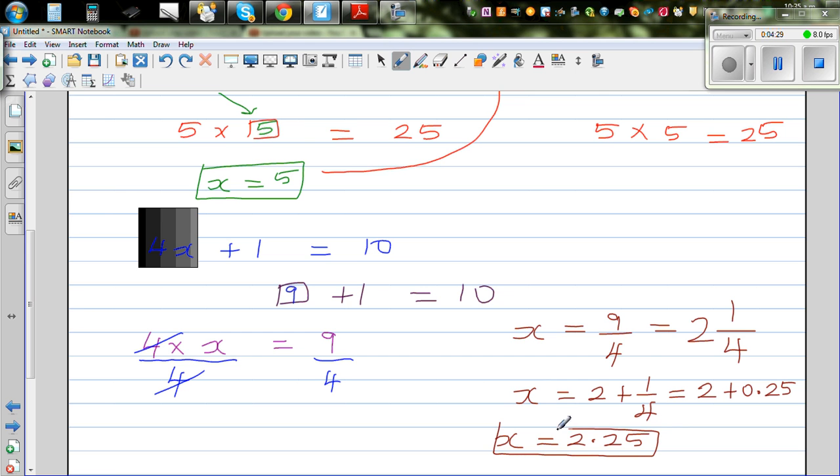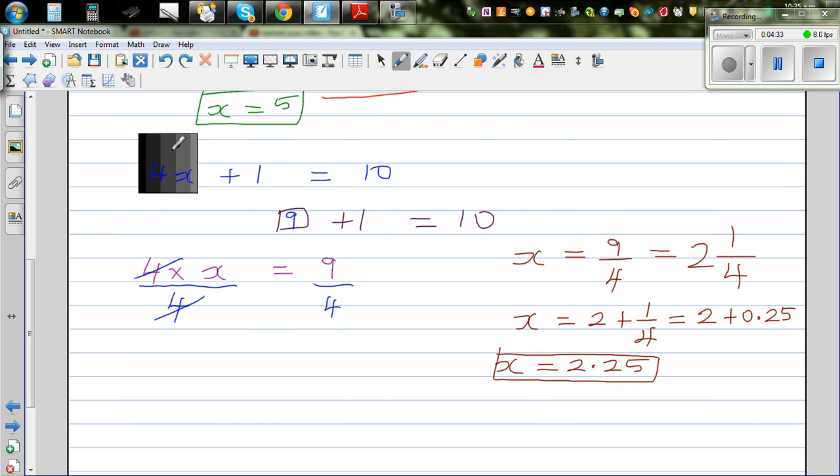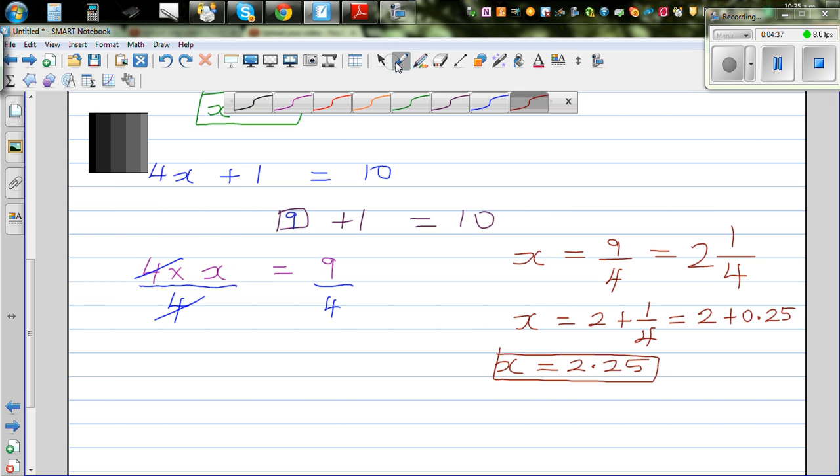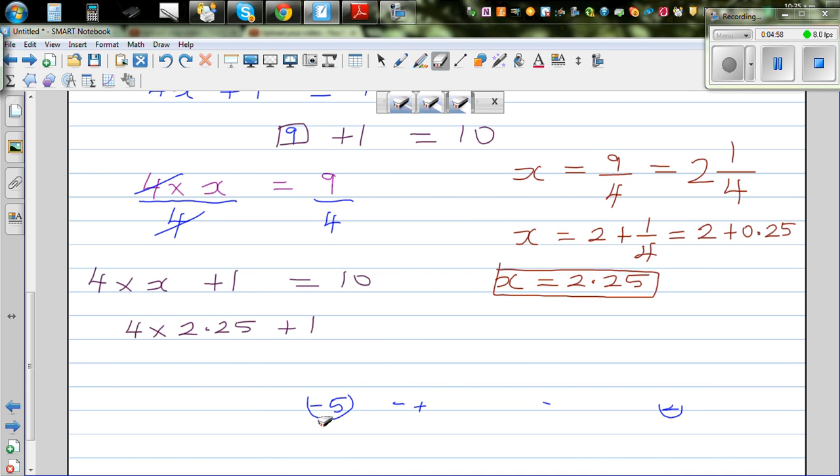So as I told you, it's always good to check whether your answer is right. So what are we saying? This equation, what is the meaning of this equation? The meaning of this equation is 4 times a number plus 1 is giving me 10. So let's check. So let's go 4 times 2 and a quarter or 2.25 plus 1. So let me delete this. What is 4 and 2 quarters? So I want to do it without a calculator. So this is 4 times 2 plus quarter plus 1. So this is using the distributive property. So this is 4 times 2 plus 4 times a quarter.